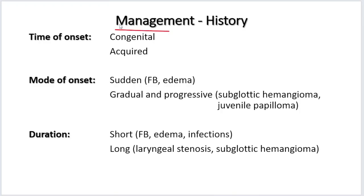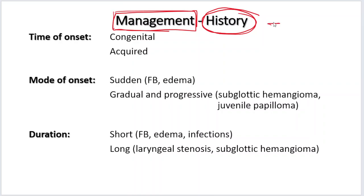Now coming to management. Management — the first tool we have is history. Taking a proper history will solve most of our problems. Time of onset: when did this problem start? By that you will come to know whether it is a congenital cause or an acquired cause.